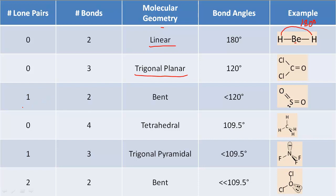When we have one lone pair and two bonds, we call that a bent shape. The bond angle here is a little bit different because the lone pair acts differently than a bond would, but it still produces this kind of shape. We call it bent to acknowledge that it has one lone pair and a different bond angle. Next, zero lone pairs and four bonds — we call that tetrahedral, with all bonds having 109.5 degree separation.